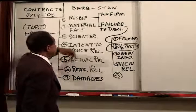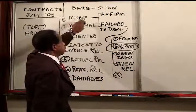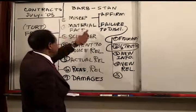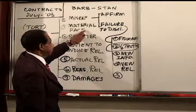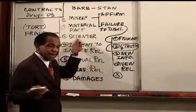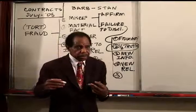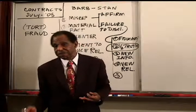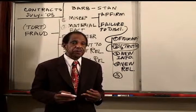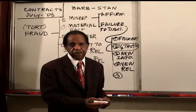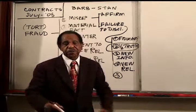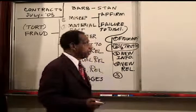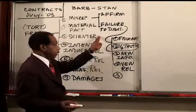Fraud requires all seven elements, and the misrepresentation is usually by the half-truth method. Material fact — explain to the examiner why the fact is material. Scienter simply means a bad state of mind: either known falsity, where I know what I'm telling you is false, or reckless disregard of the truth, where I tell you something is true without knowing one way or another. Either satisfies scienter.